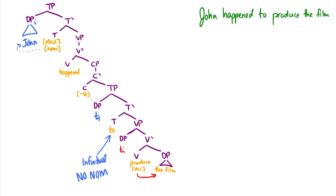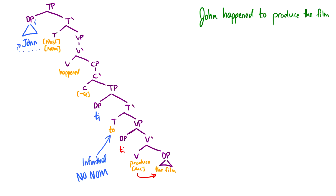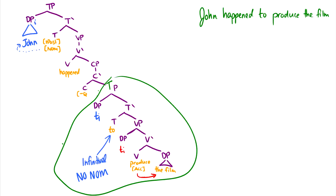Now John finally gets nominative case. There are a few things going on: the Extended Projection Principle says something needs to be in spec TP; John the DP needs case; and 'happen' doesn't have any theta roles assigning for a subject, so there's no spec VP — nothing there that has to move up. The nearest DP is all the way down in the embedded clause, so it gets pulled up to the main clause, giving us 'John happened to produce the film.' This is a raising verb.